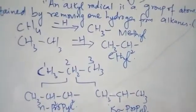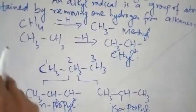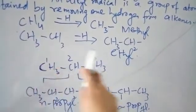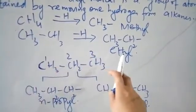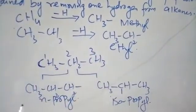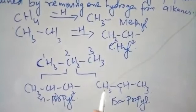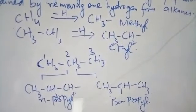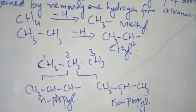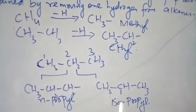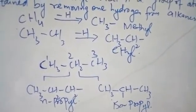So, from methane removing hydrogen gives you a methyl radical. From ethane removing hydrogen gives you an ethyl radical. From propane removing hydrogen gives two possibilities: you will get the N-propyl radical and the isopropyl radical.